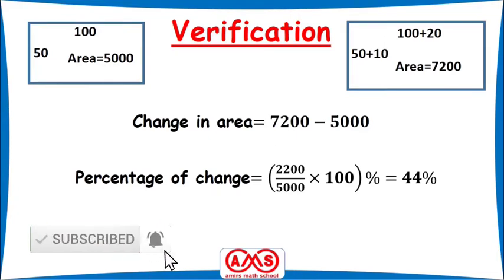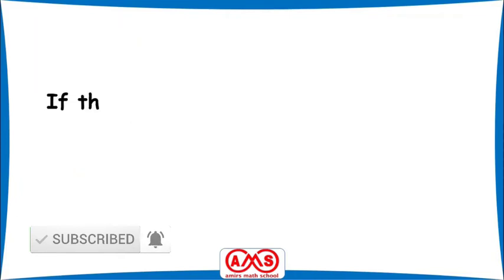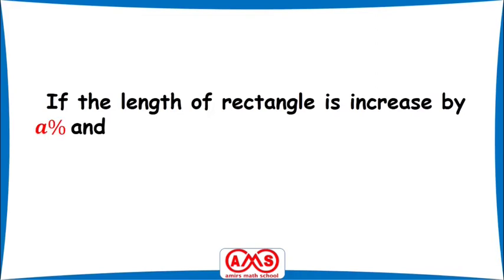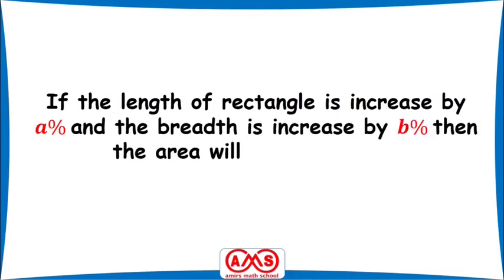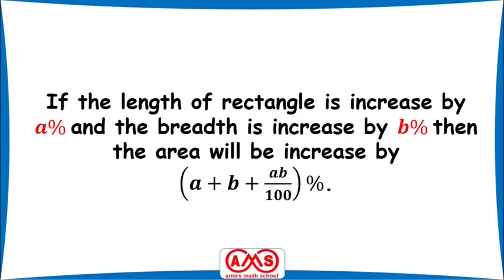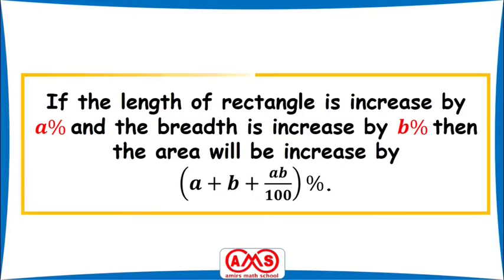The general formula is: if the length of a rectangle is increased by A percent and the breadth is increased by B percent, then the area will increase by A plus B plus AB divided by 100 percent. Here A is the length increase percentage and B is the breadth increase percentage. Substituting the values of A and B in this formula gives the percentage of area increase.